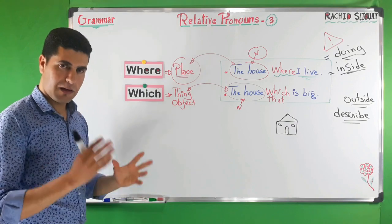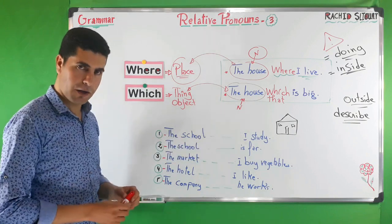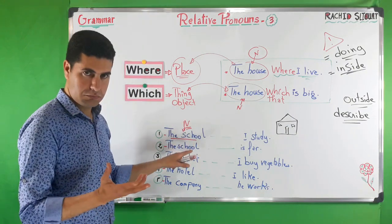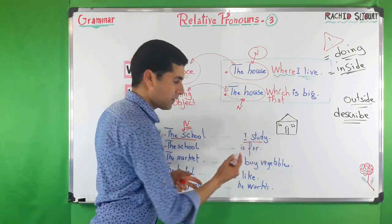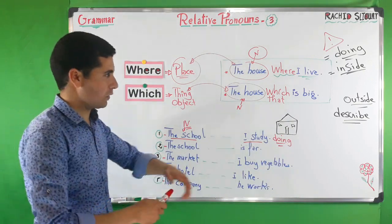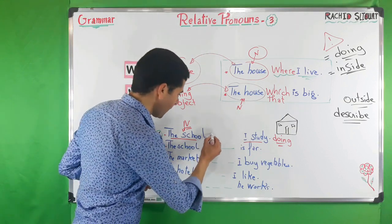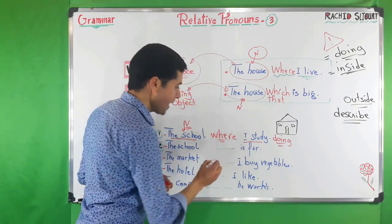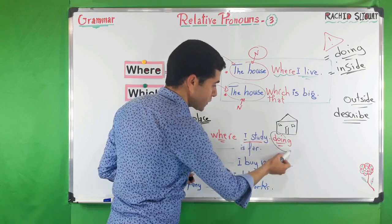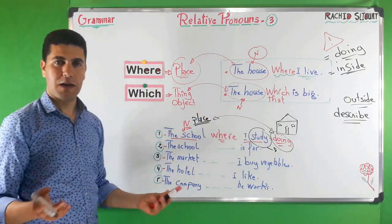Let's try some examples. Number one: 'The school I study.' The noun is 'the school.' I study is something we do inside the school — it is related to doing something inside. So we say: 'The school where I study.' We use where because we are talking about doing something — studying — inside the school.